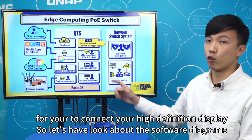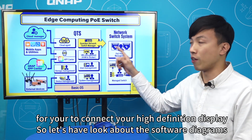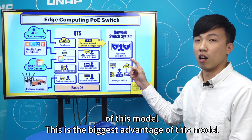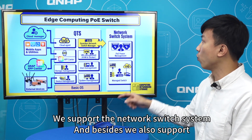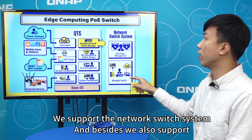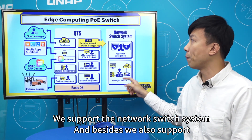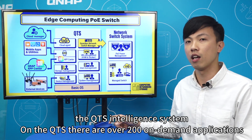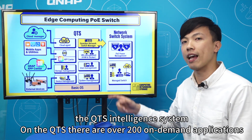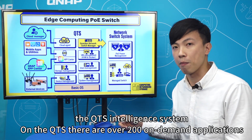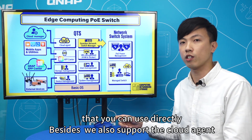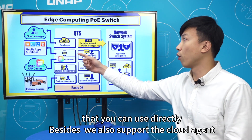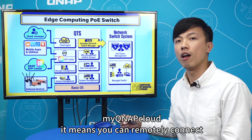Now let's have a look at the software diagram for this model — this is a big advantage. You can see it supports the network switch system, and besides that, it also supports the QTS intelligent system. On QTS there are over 200 on-demand applications you can use directly, and we also support the cloud agent myQNAP Cloud.